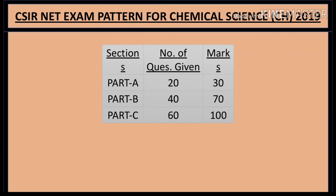For the Chemical Sciences exam pattern, there are also 3 parts: A, B, and C. Part B has 40 questions worth 70 marks. Part C has 60 questions worth 100 marks. You should prepare for all parts thoroughly.